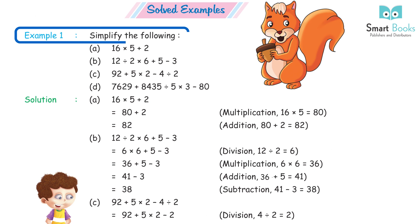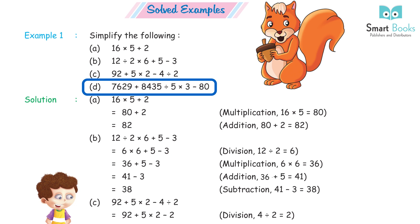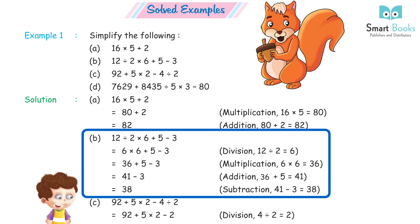Example 1 — simplify: A) 16×5 + 2: first multiplication 16×5 = 80, then addition 80 + 2 = 82. B) 12÷2×6 + 5 − 3: division first 12÷2 = 6, multiplication 6×6 = 36, addition 36 + 5 = 41, subtraction 41 − 3 = 38.